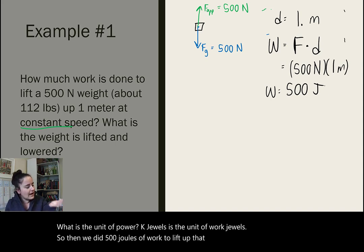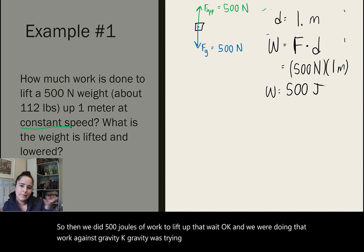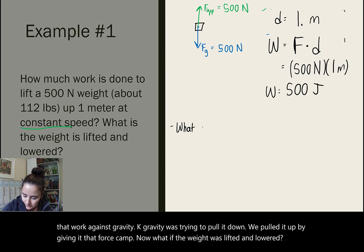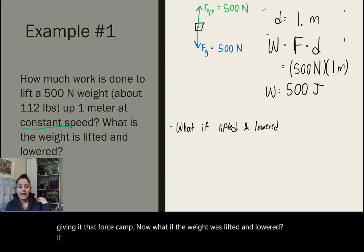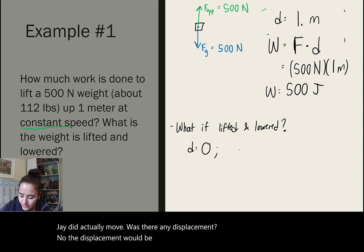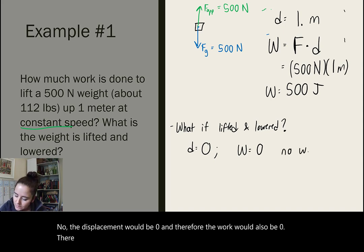And we were doing that work against gravity. Gravity was trying to pull it down, we pulled it up by giving it that force. Now, what if the weight was lifted and lowered? Well, if we lifted it up and then we let it fall back down, did it actually move? Was there any displacement? No. The displacement would be zero, and therefore, the work would also be zero. There would be no net work done.